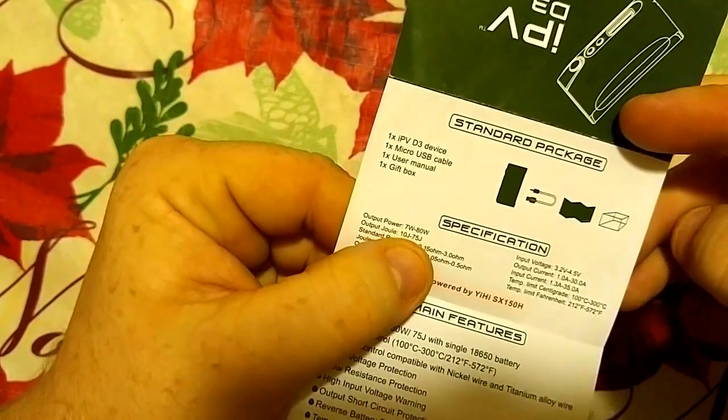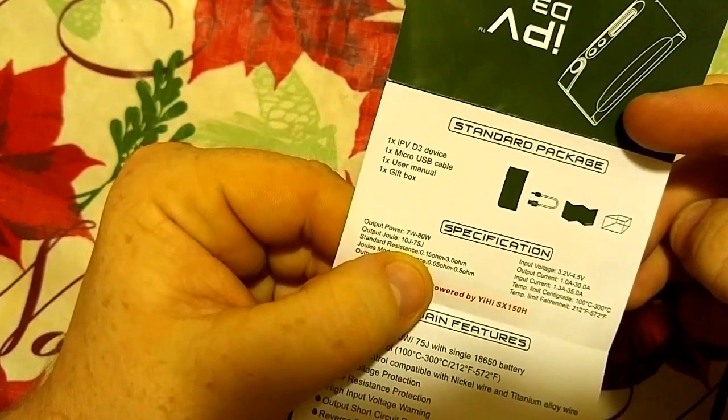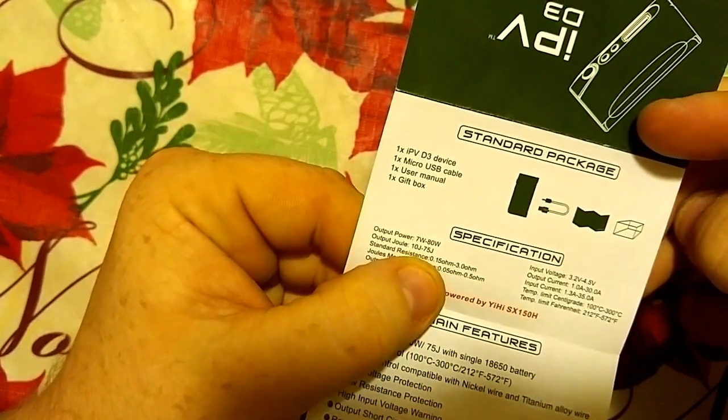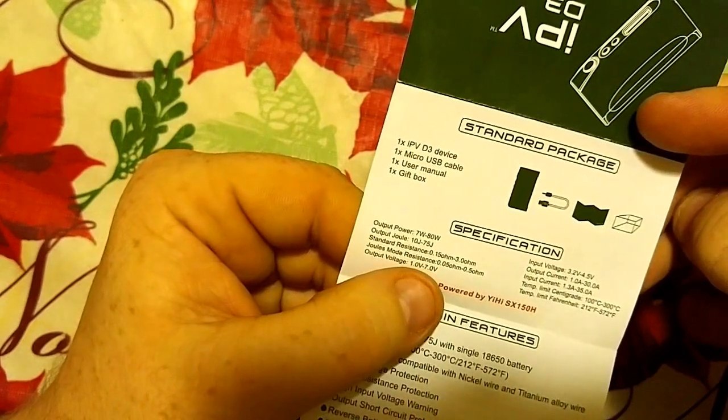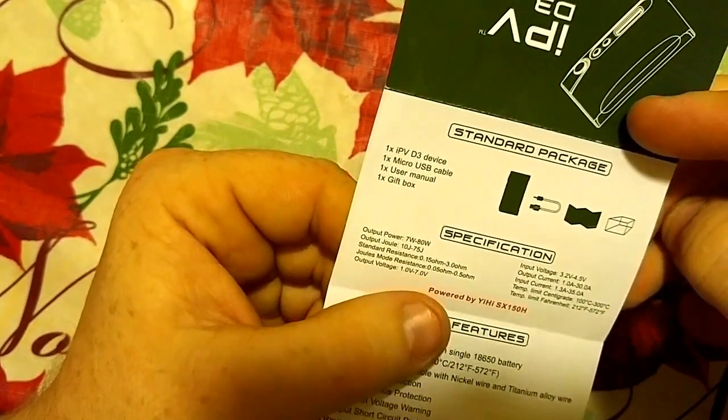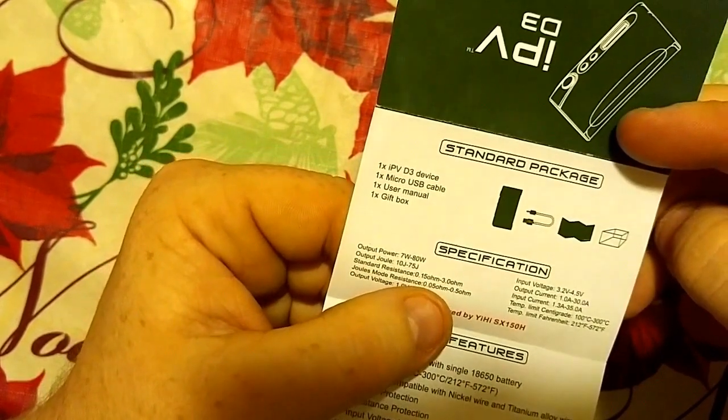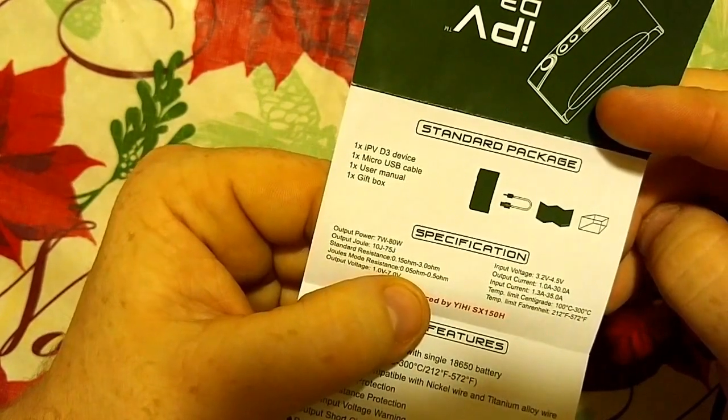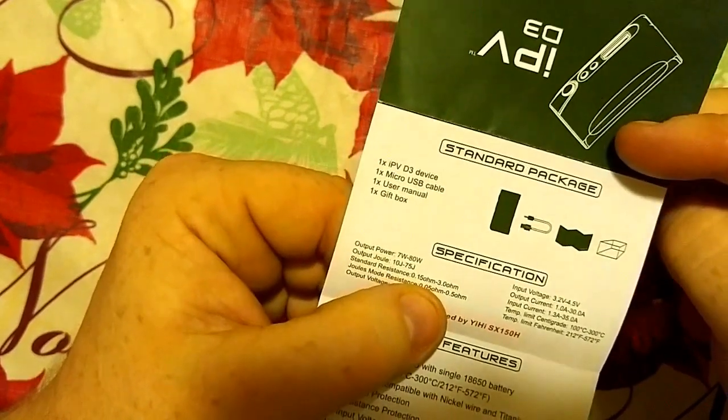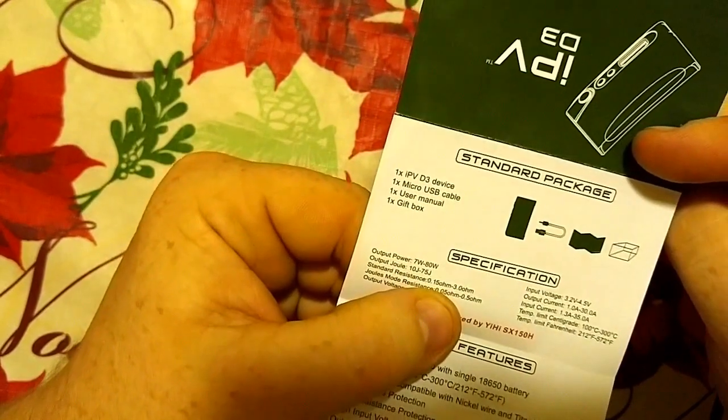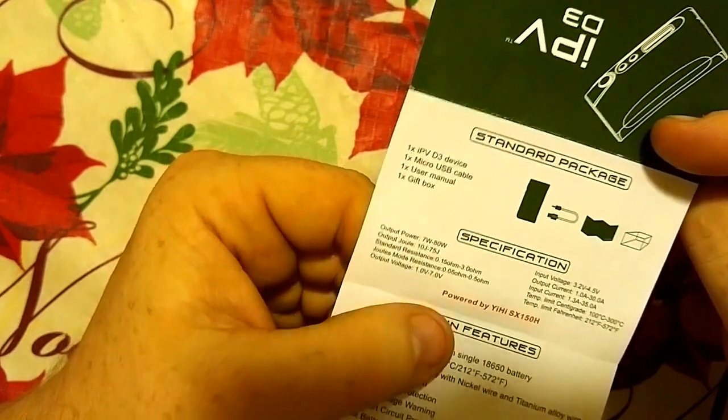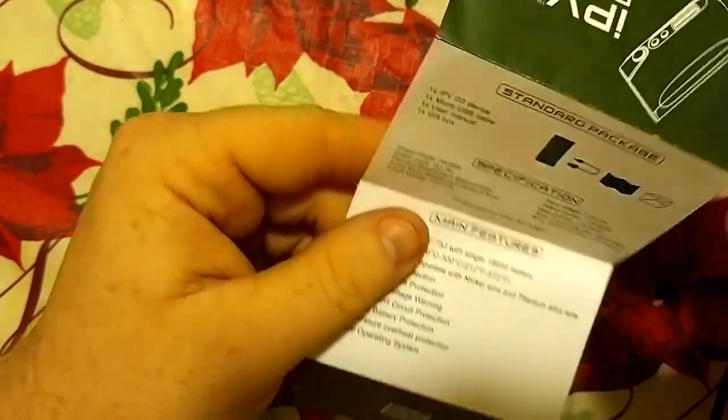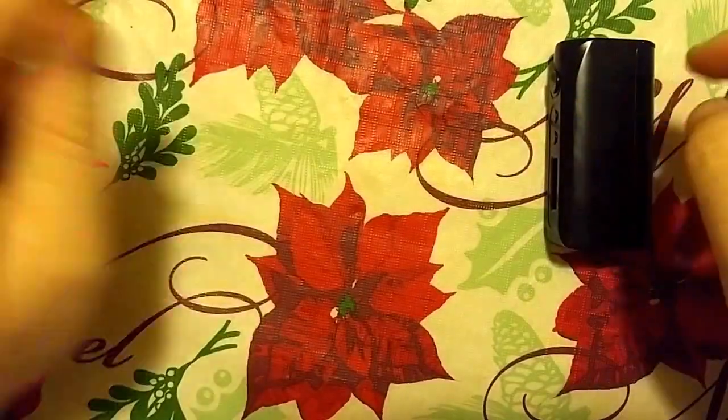As you can see here, it has an output of 7 to 80 watts. Or, in temperature control mode, or IPV version, is 10 to 75 joules. That's their temperature control version. And your standard resistance here, in power mode, is 0.15 and it will fire all the way up to 3 ohms. Your joule mode is going to be 0.05. I believe the IPV D2 was 0.2, so a little bit of an upgrade there. Your total output voltage is going to be 1 to 7 volts. And this does have step down. Just so you guys know. I'll show you that.